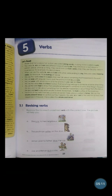Words that tell us about an action are called doing words. A doing word is called a verb. The verbs 'am,' 'is,' and 'are' are different ways of saying 'be.' They introduce a fact about a person, place, animal, or thing. They are known as main verbs when they are the only verb in a sentence — for example, 'She is a student.'